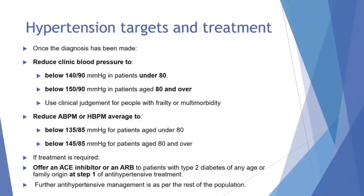Once the diagnosis has been made, we must reduce the clinic blood pressure to below 140/90 if the patient is under 80, or below 150/90 in patients aged 80 and over, using clinical judgment. If using ambulatory or home blood pressure monitoring, we must reduce the blood pressure to below 135/85 for patients aged under 80. The main treatment message is that we need to offer an ACE inhibitor or an ARB to patients with type 2 diabetes of any age or family origin at step 1 of the antihypertensive treatment. Further antihypertensive management is as per the rest of the population.